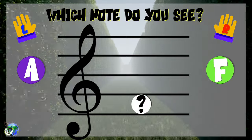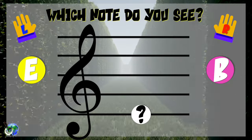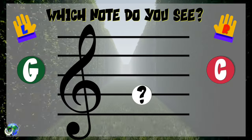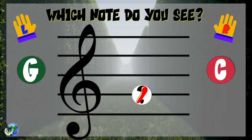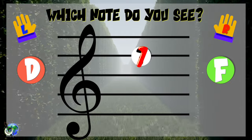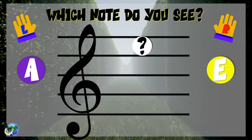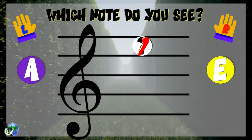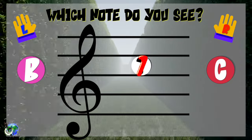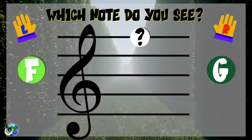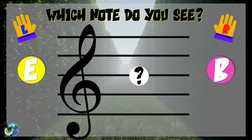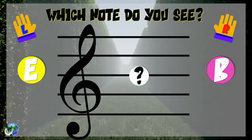Which note do you see? 3, 2, 1 — F. Which note do you see? 3, 2, 1 — E. Which note do you see? 3, 2, 1 — G. Which note do you see? 3, 2, 1 — D. Which note do you see? 3, 2, 1 — E. Which note do you see? 3, 2, 1 — C. Which note do you see? 3, 2, 1 — F. Which note do you see? 3, 2, 1 — B.